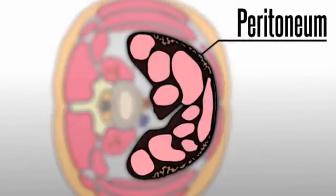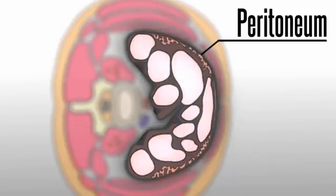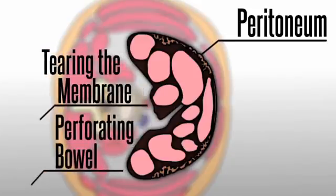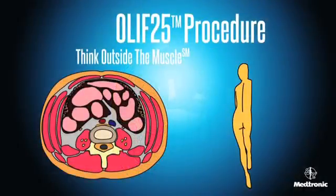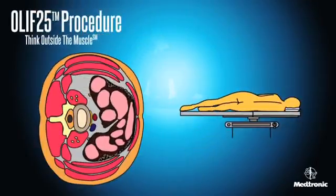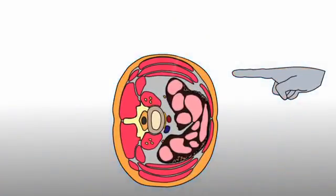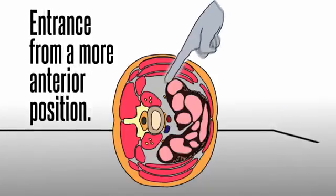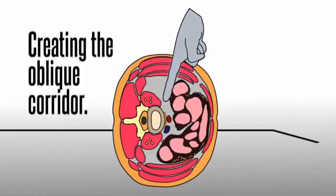The peritoneum is a thin membrane lining the abdominal cavity containing the intestines. Anatomical concerns include tearing the membrane or perforating the bowel or intraabdominal contents. In an OLIF-2-5 procedure, the patient is positioned laterally and the peritoneal contents fall anteriorly due to gravity. The finger or blunt instrument enters the retroperitoneal space from a more anterior position, pointed posteriorly to skive off the top of the peritoneum, and the peritoneal content can then be swept anteriorly, creating the oblique corridor.